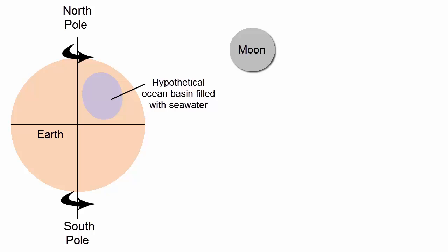This image shows the Earth with a cut-out ocean basin. Since the bulges of water are confined to these basins, they are forced to slosh back and forth as the Earth rotates relative to the Moon.